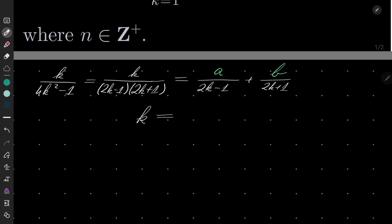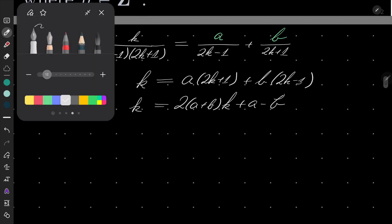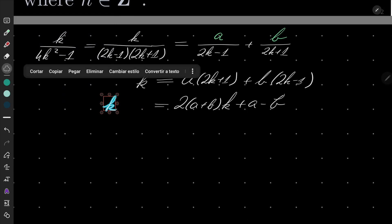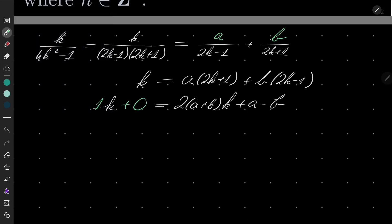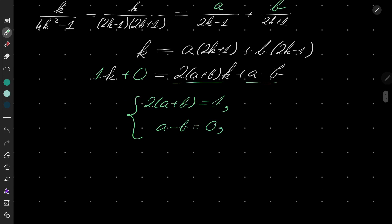How to find the exact value of these constants? Let's take this equality and get rid of the denominators. Multiplying both sides, we get k equals a(2k plus 1) plus b(2k minus 1). After expansion and ordering of terms, we get 2(a plus b)·k plus (a minus b), and that should be true for every integer k. Comparing coefficients: here we have 1·k plus 0.